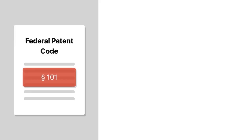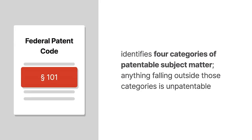Section 101 of the Federal Patent Code identifies four categories of patentable subject matter, including new and useful processes. Anything that falls outside of those categories is unpatentable, including mathematical formulas and algorithms.